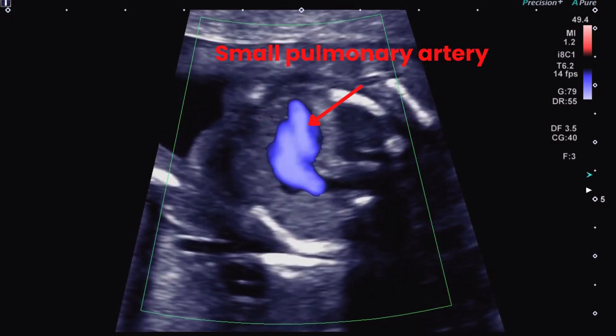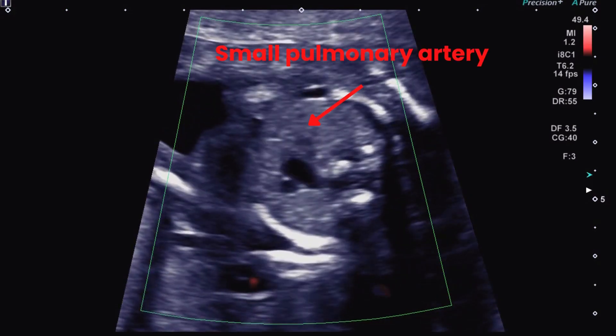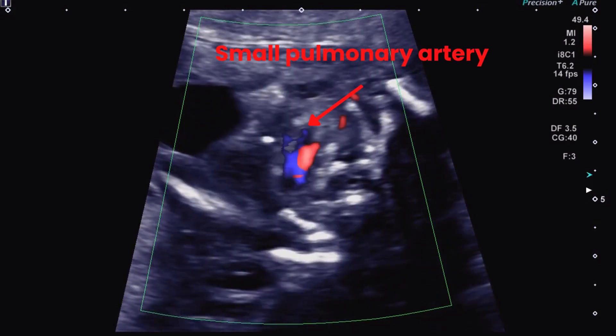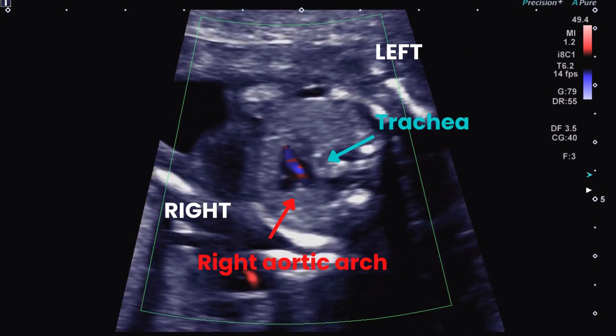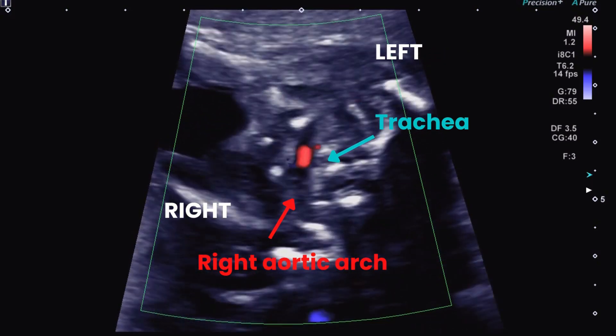You can see the pulmonary trunk is a lot smaller than the aorta, and also the right-sided aortic arch coursing to the right of the trachea.